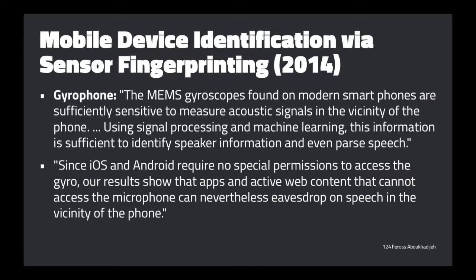Stanford researchers in 2014 found that the gyroscope was so precise you could actually pick up acoustic signals. Even without microphone permission, based on how the phone moves, you can pick up what's being said in the room and reproduce it. Since iOS and Android required no special permissions to access the gyro, any arbitrary website could read it and eavesdrop on speech nearby.